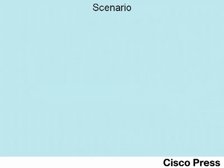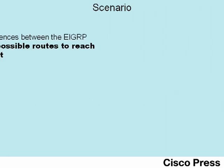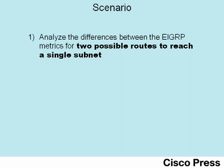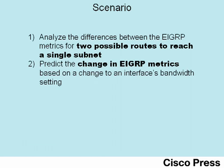This video uses two main scenario steps to demonstrate how EIGRP works with metrics. In the first step, you'll analyze the differences between the EIGRP metrics for two possible routes to reach a particular single subnet. In the second part, you'll predict the change in the EIGRP metric calculated by a particular router based on changes to that interface's bandwidth setting.